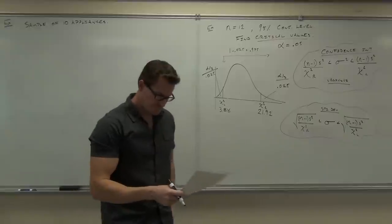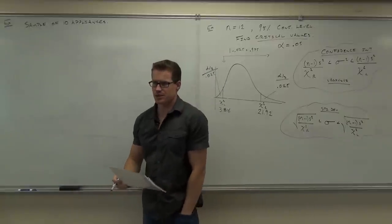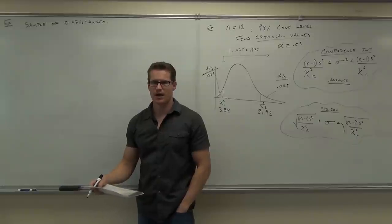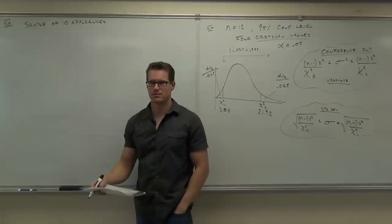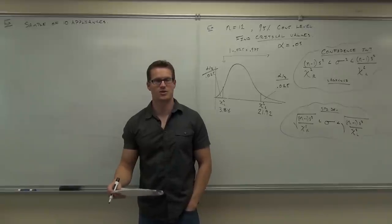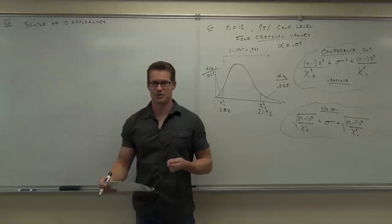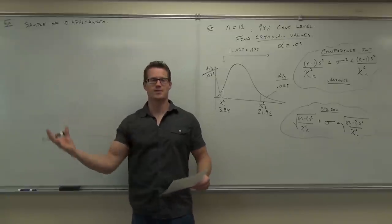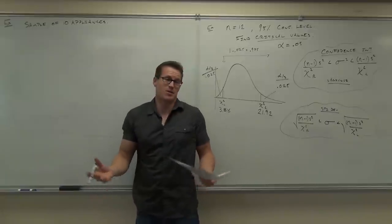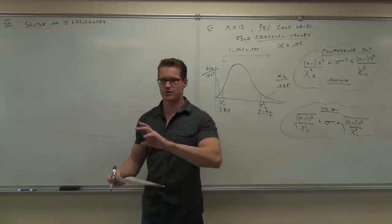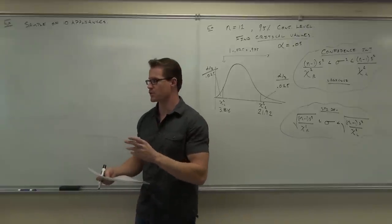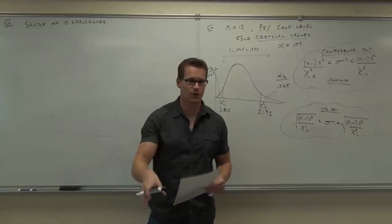For example: you're going to sample 10 appliances and read the volts. The voltage outputs should be pretty consistent — think of your phone charger. You want every phone charger to put out exactly the same amount of voltage, otherwise things could go wrong. We don't want them to vary very much, because if they vary too much, we're going to end up ruining things. You want appliances to put out the same number of volts and not have too much spread.